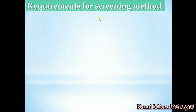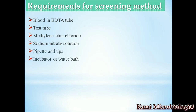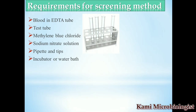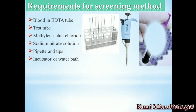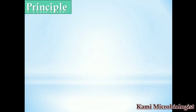To perform the screening method for G6PD, you will require the following materials: blood in an EDTA tube, test tubes, methylene blue color reagent, sodium nitrate solution, a pipette with tips, and an incubator or water bath. These are shown in the picture — test tube rack, pipette, EDTA blood, water bath (you can also use an incubator), and pipette tips.